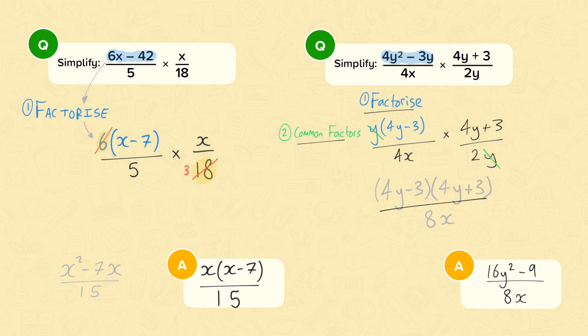Now, the reason we do want to expand this is because this is going to simplify nicely. Because we have the difference between two squares. 4y minus 3. 4y plus 3. Look what happens when we multiply this out. 16y squared.